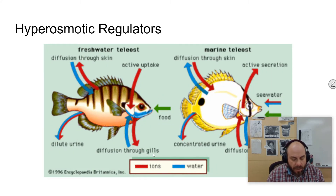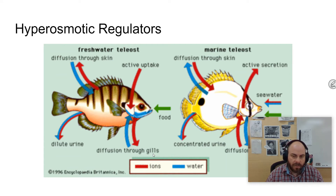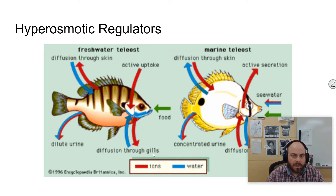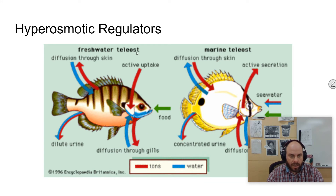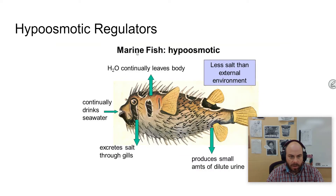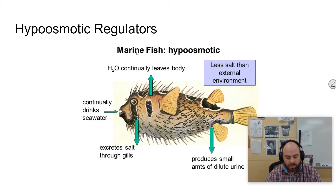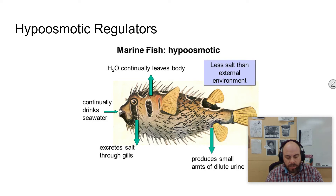Another category is hyperosmotic regulators. Hyper means more than, so the fluids inside are more concentrated than the fluids outside. This would be like freshwater fish, which need to maintain a concentration of body fluids much greater than the water surrounding them. The opposite is a hypoosmotic regulator — marine fish are more hypoosmotic, meaning their body fluids are much less concentrated than the surrounding water. For terrestrial animals, we still lose water through respiration, evaporation off our bodies, and sweat, so we have to maintain water levels through structures like kidneys.